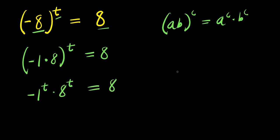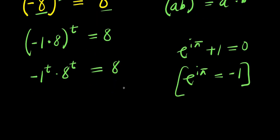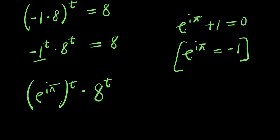Now, using Euler's identity: e power i times pi plus 1 equals 0, which means e power i times pi equals negative 1. So instead of negative 1, I substitute e power i times pi, raised to the power t, times 8 power t equals 8.